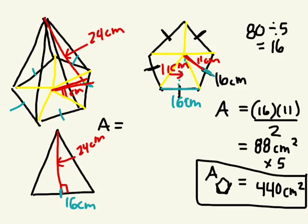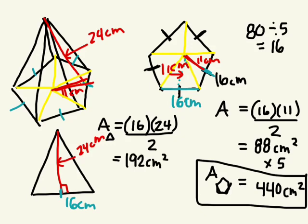So area of one triangle is, this is of the triangular faces on the outside. How to find the area of the triangle? 16 times 24 divided by 2. 192 centimetres squared. Five triangles. Excellent. Because there's five triangular faces all together. Yeah, 960 centimetres squared.